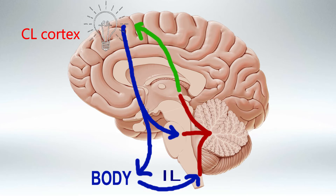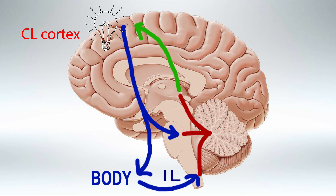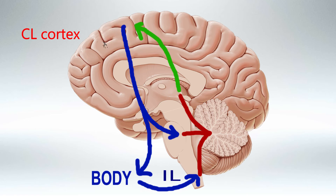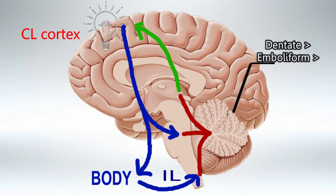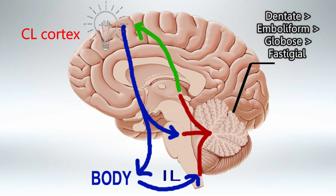To recap: the movement starts in the contralateral primary motor cortex and travels to the body, also sending the motor plan to the cerebellum via the middle peduncle. The cerebellum uses the inferior peduncle to compare the ipsilateral movement of the body with the motor plan, and uses the superior peduncle to tell the motor cortex about any needed modification.